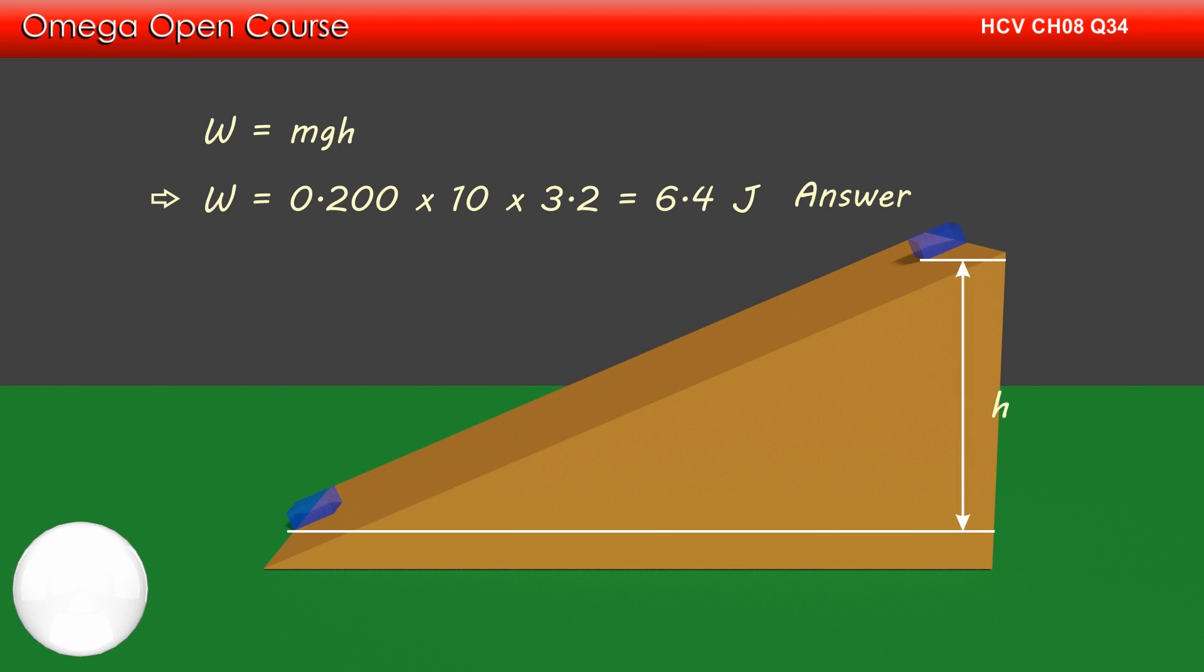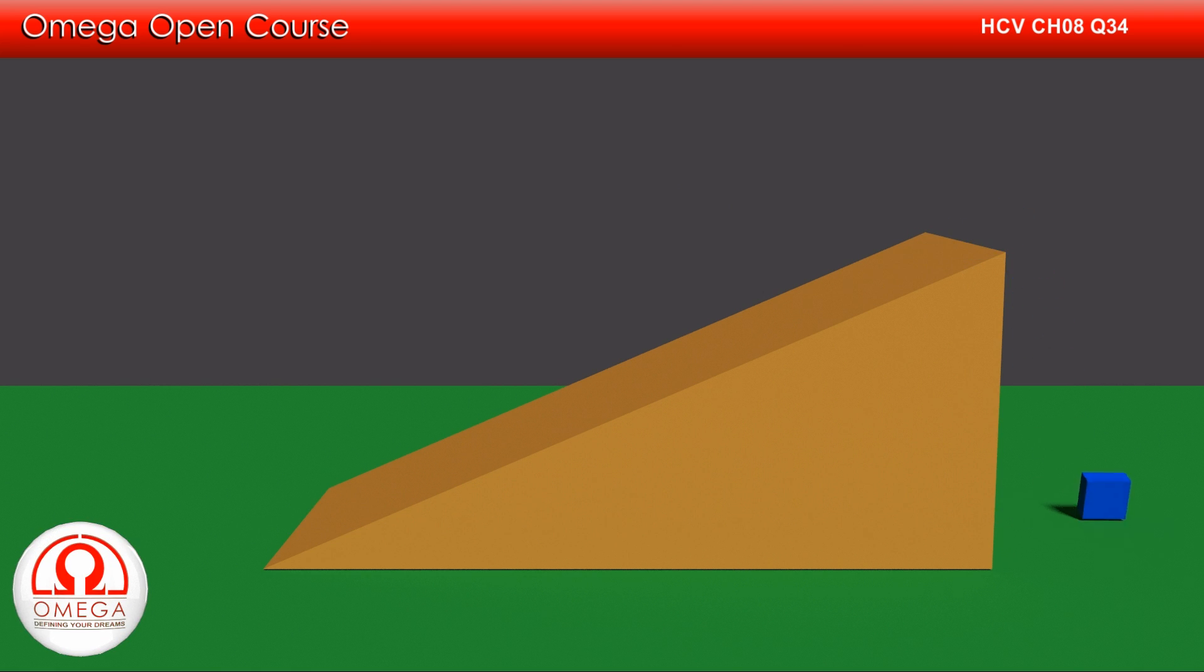The answer for part B is 6.4 joules. When the block falls off the incline, the work done by gravity on the block will get converted into kinetic energy of the block. Since in falling down the block will move a vertical distance of h, the work done by gravity is mgh. Hence, mgh must be equal to half mv squared, or v squared is equal to 2gh.